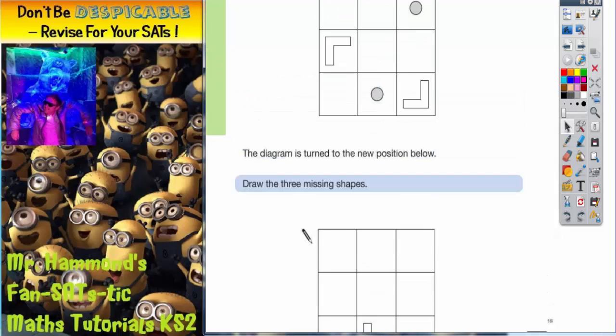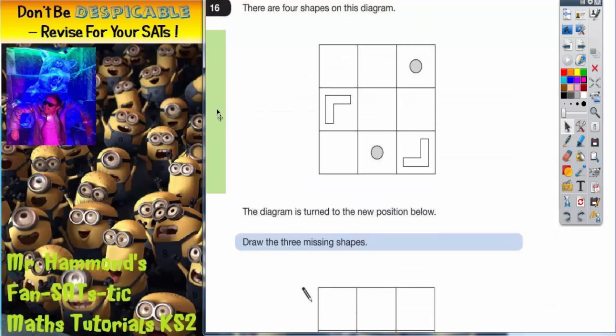Now there's a very simple trick we can do to solve this problem. So if we get some tracing paper and trace this shape, it shouldn't take us any longer than 30 seconds.